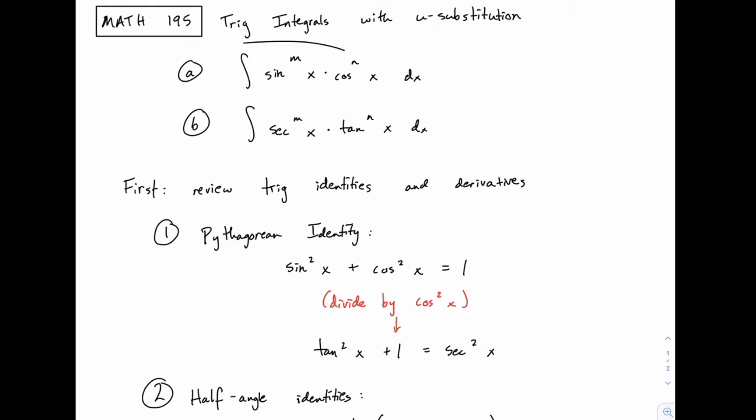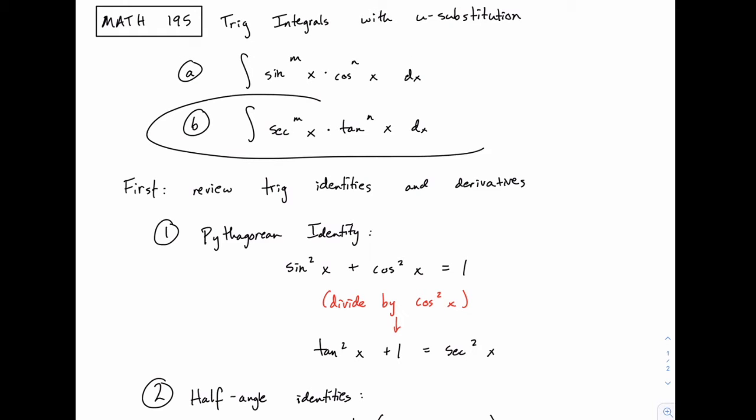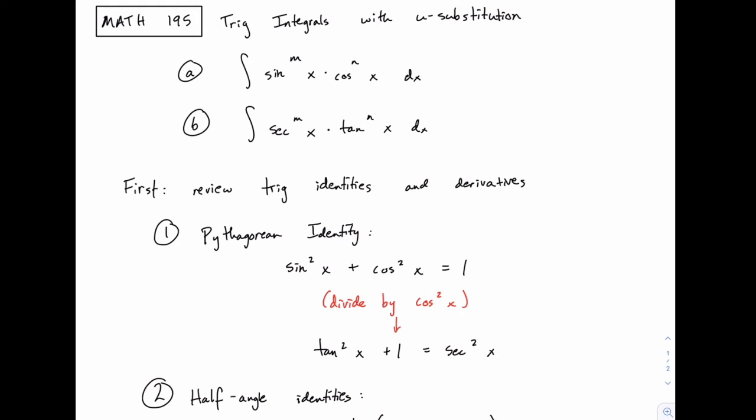One type is where we have powers of sine and cosine, and another where we have powers of secant and tangent multiplied together. For those two types of problems we're going to observe several cases, and in each case we're simply going to do u substitution. By observing several examples of the same form we can find a pattern that will help us pick the u substitution carefully and easily.